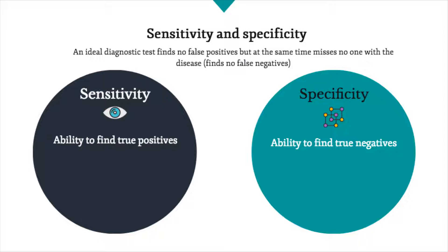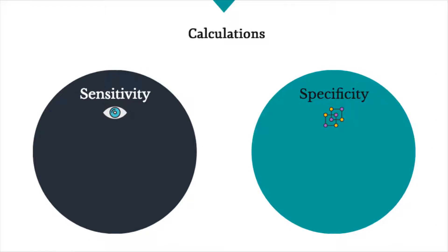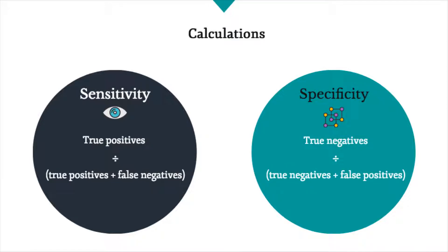Sensitivity refers to the probability of a person with the condition of interest having a positive result, also known as the true positive proportion, or TPP. Specificity refers to the probability of a person without the condition of interest having a negative result, also known as the true negative proportion, or TNP. Sensitivity can be calculated by dividing the total amount of true positives in a group by the sum of true positives plus false negatives, while specificity can be calculated by dividing the total amount of true negatives in the group by the sum of true negatives plus false positives.